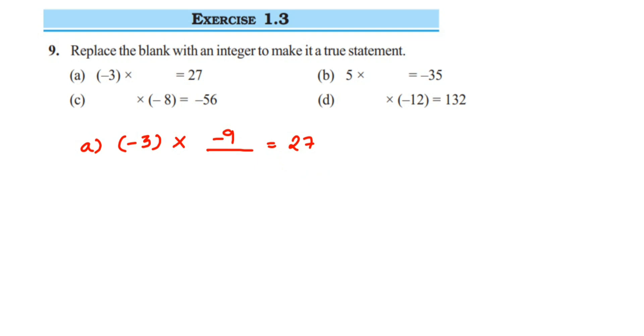Now the second question: 5 times what should you multiply to get -35? We know that 5 times 7 equals 35, right?